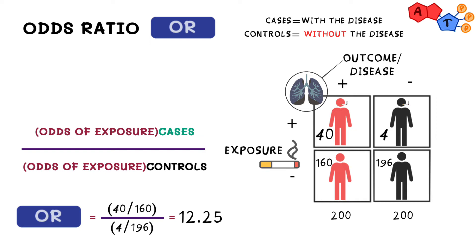So what does this 12.25 mean? It means that patients with lung cancer are 12.25 times more likely to be smokers. Please be very careful and appreciate the difference — I did not say smoking will increase your risk of lung cancer by 12.25 fold. It's the other way around: having lung cancer means you're 12.25 times more likely to be exposed to smoking.